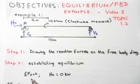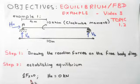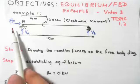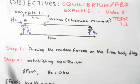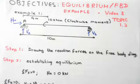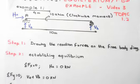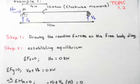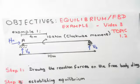Sum of forces in the x-direction (horizontal) equals zero. Since Ha is the only horizontal reaction force, we can't add it to anything else, so immediately we can see that Ha equals zero kilonewtons.